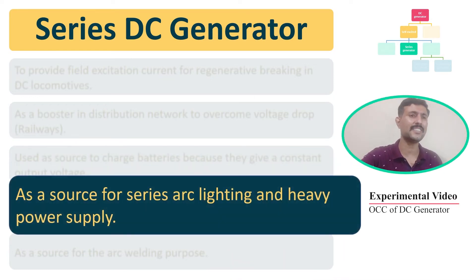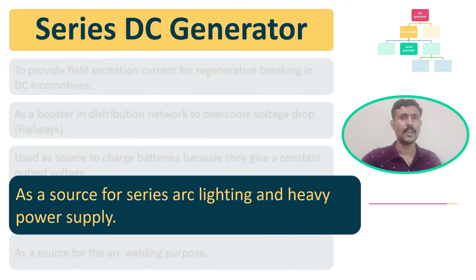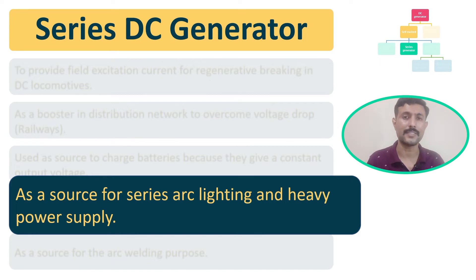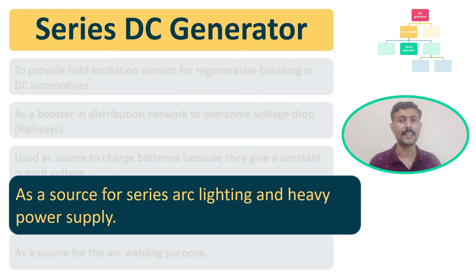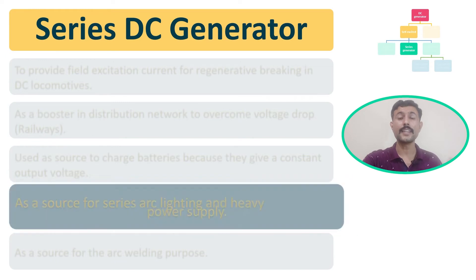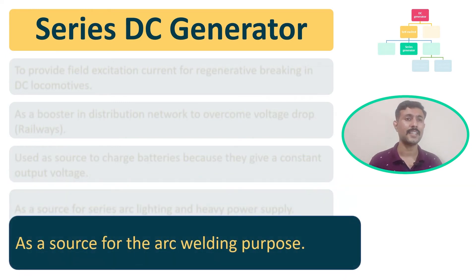The series DC generator can also be used as a source for series arc lighting and heavy power supply, because these applications require a large amount of current. The field resistance of a series generator is very low compared to a shunt generator, which is why it can provide larger current to the load at the same speed.